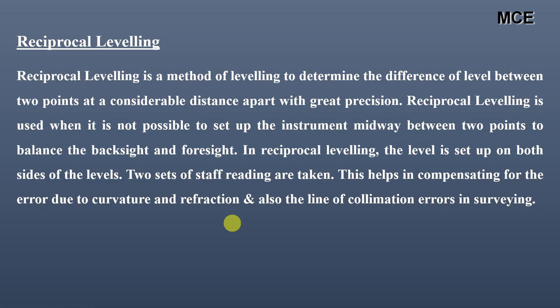In reciprocal leveling, the level is set up on both sides and two sets of staff readings are taken. This helps in compensating errors due to curvature and refraction and also error due to the line of collimation that occur in surveying.